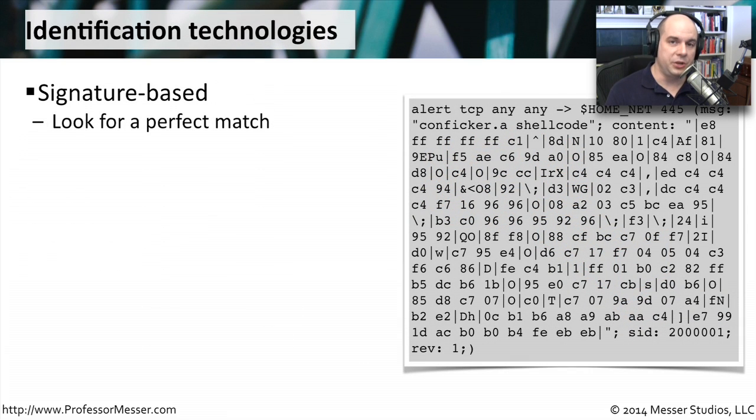A fundamental technology used in IPS's and IDS's is something called a signature-based match. We want to be able to look at the exact code going over the network, and if we see this code, then we're going to stop that traffic. Some of these signatures can be very detailed.